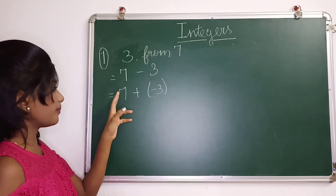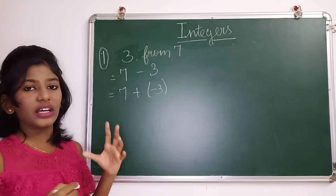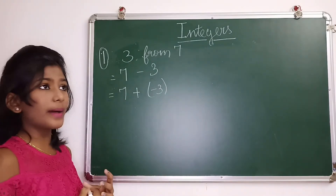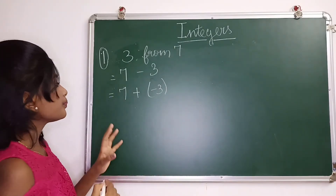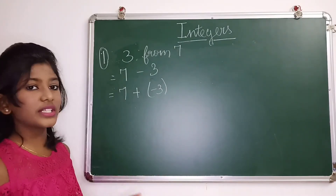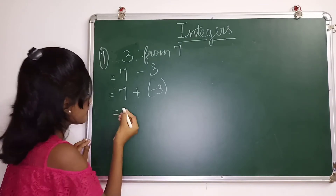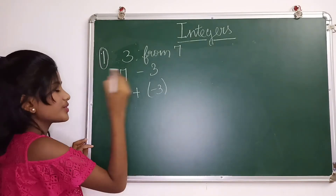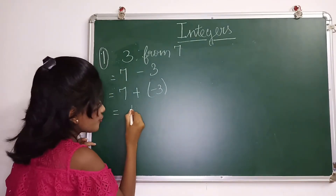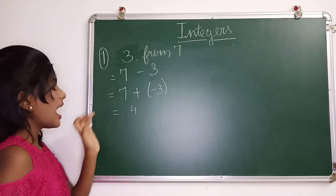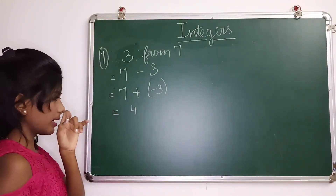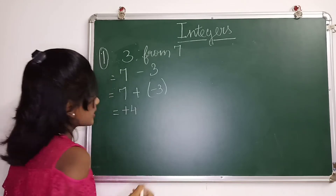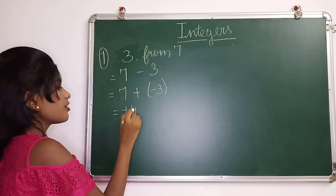Now we apply the rule of addition. The signs are different, so we subtract them and put the greater sign. 7 minus 3 is 4, and since 7 is greater with a positive sign, the answer is plus 4.